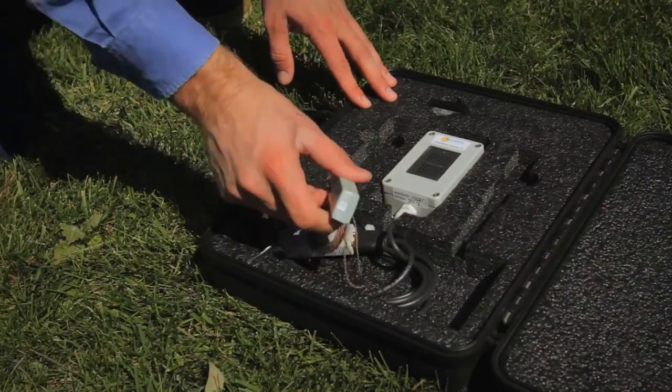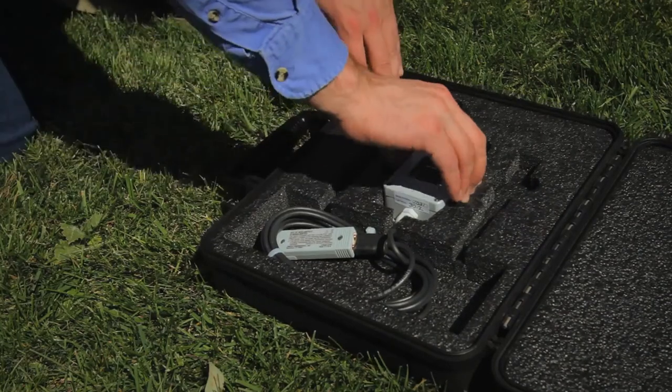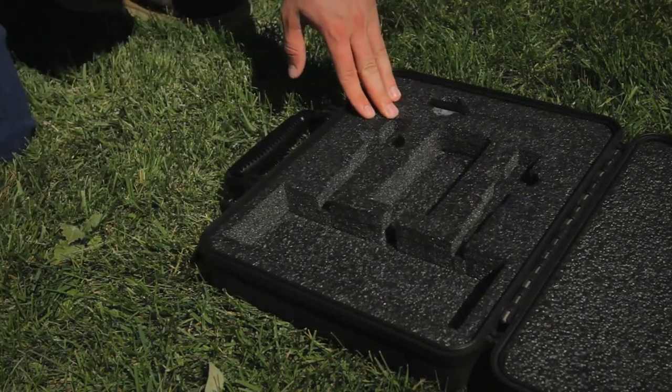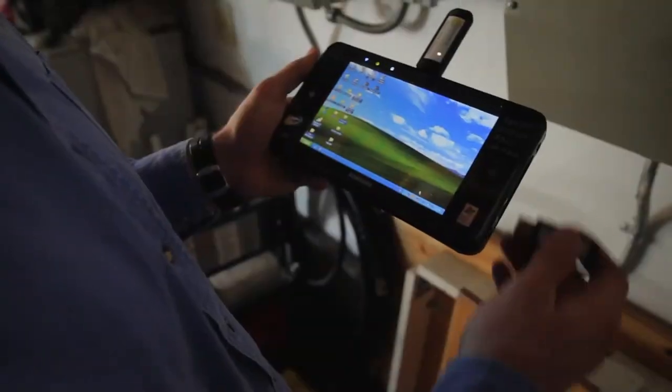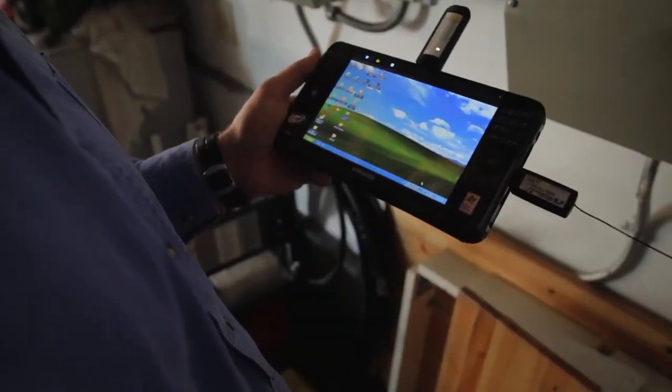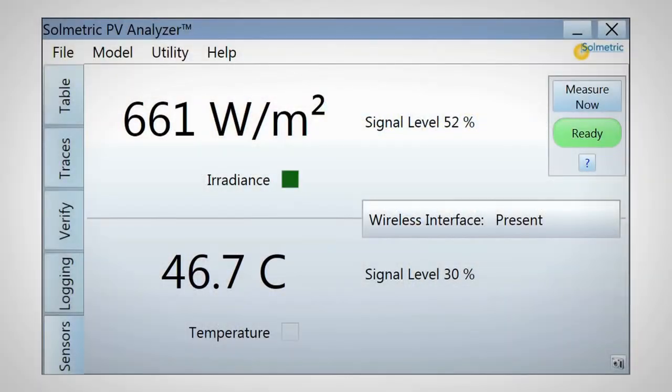The wireless PVA sensor kit includes an irradiance sensor and a thermocouple temperature sensor to provide nearly simultaneous irradiance and temperature inputs to the performance model. Both sensors interface wirelessly with the PC and readings are continuously updated in sync with the IV curve measurements.